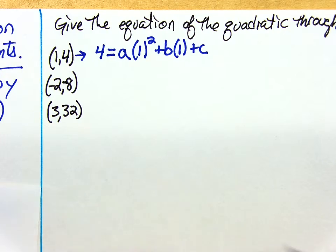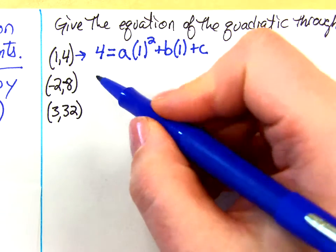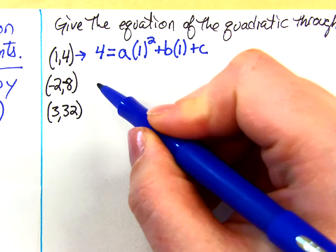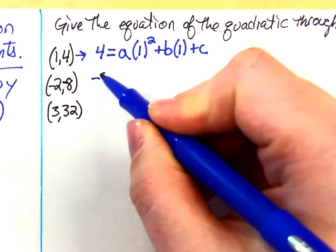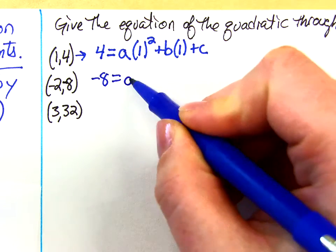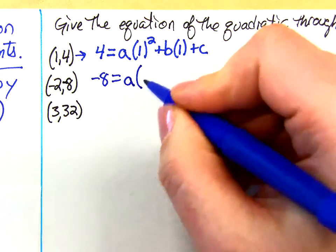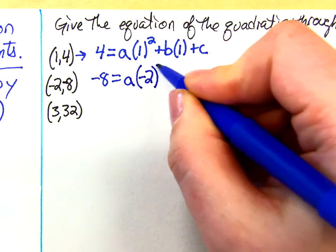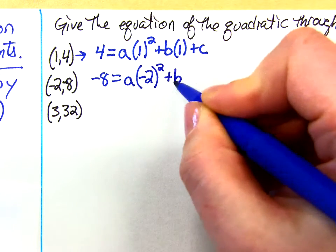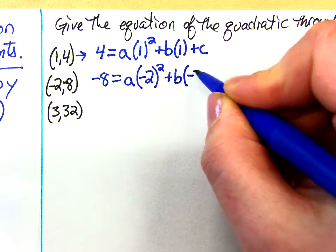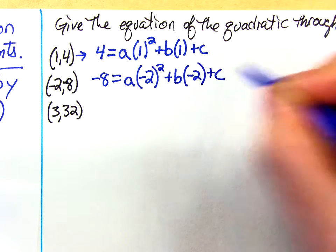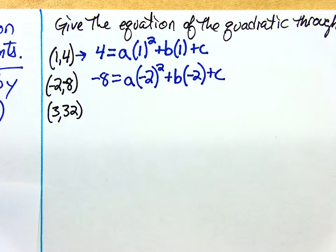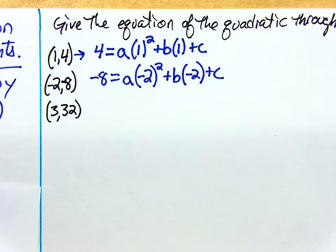Now let's try with the second point. What goes in for y? Negative 8 equals, I still don't know what a is, but this time x is negative 2. So I do negative 2 squared, I don't know what b is, but x is still negative 2 plus c. Do you see that?